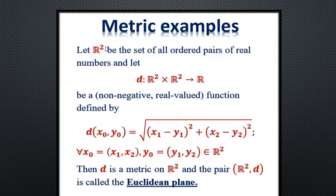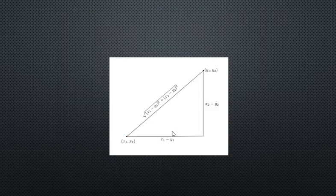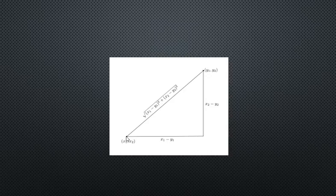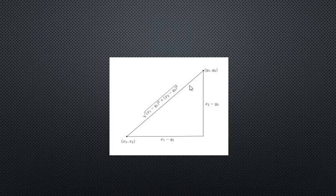For the set ℝ² (the xy-plane), we can define another metric. Take a point (x₁, x₂) in ℝ² and another point (y₁, y₂) in ℝ², and define the distance as d = √((x₁−y₁)² + (x₂−y₂)²). This is just the straight-line distance between two points. When we apply this to ℝ², the pair is called the Euclidean plane. This is the Euclidean metric on ℝ², representing the shortest distance between two points, and is familiar to most people.